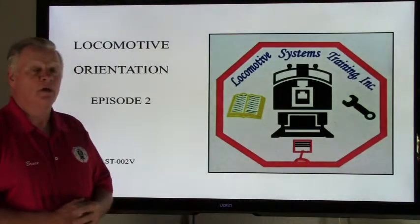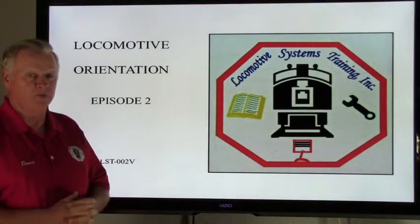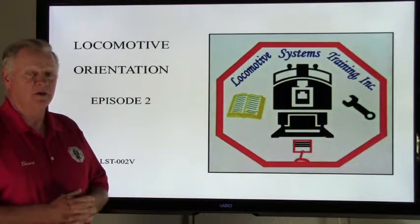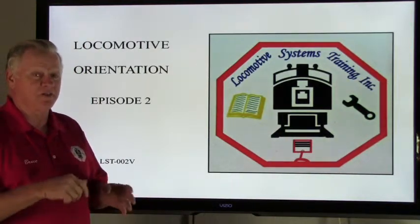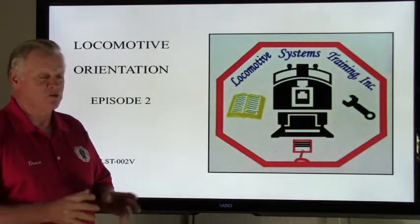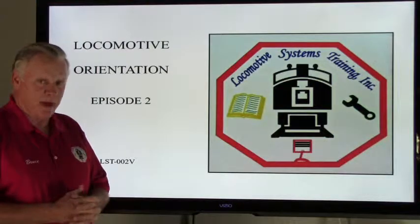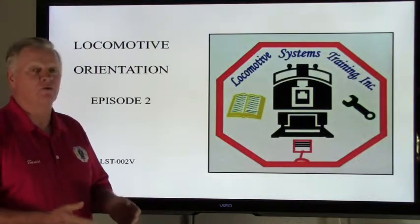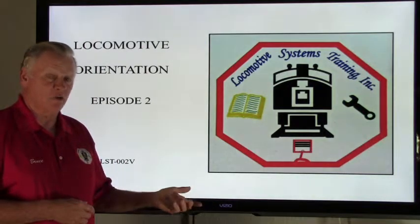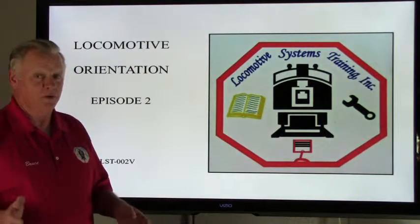If we're in the cab of that locomotive and the letter F is on the long hood end, and you're sitting in the engineer's seat, virtually everything changes. The front of the locomotive now becomes the back, the back becomes the front, your left side is now the right side of the locomotive, and your right side is now the left side.